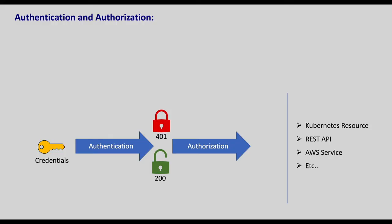This process is called authorization. If we are not authorized to perform the requested action, we will be thrown out with a 403 error. And if we are authorized, we will be able to complete the requested action. So in summary, with authentication we prove that we are a valid user, and with authorization we will be checked if we can perform a specific task. There are different models with which we can achieve authorization, like role-based access control, attribute-based access control, node authorization, etc.